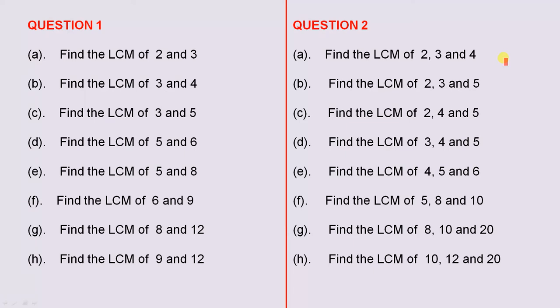Question 2: find the lowest common multiple of 2, 3, and 4. So we can also find the lowest common multiple of any 3 numbers. Here we have 8 examples where we're asked to find the lowest common multiple, and each of the questions has 3 numbers.